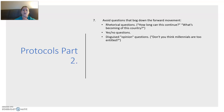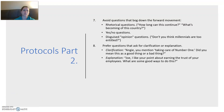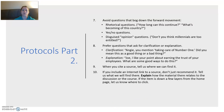Avoid questions that bog down the forward movement, like rhetorical questions such as 'how long can this continue?' or 'what's becoming of this country?' — questions that don't really need an answer. Yes/no questions don't really move the conversation forward, nor do questions that are disguised as opinions, like 'don't you think millennials are too entitled?' Prefer questions that ask for clarification or explanation — for example, 'Angie, you mentioned taking care of number one — did you mean this is a good or a bad thing?' or 'Joe, I like your point about earning the trust of your employees — what are some good ways to do this?' When you cite a source, tell us where we can find it. If you include a link, tell us what we're going to find there and how the material relates to the conversation. If the information is somewhere down the page, tell us where to look.